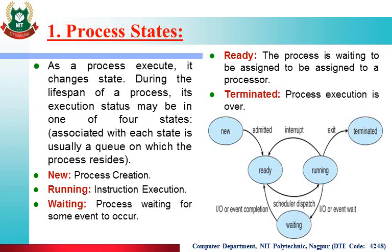Out of the number of processes, some become ready for starting their execution, so those processes move from the New state to the Ready state. From the earlier example: if job queue has 10 processes and 4 are ready, then those 4 come from New to Ready — which we call 'admitted.' The Ready queue is in main memory (RAM). So: if the state of a process is New, the process is on the hard disk; if the state is Ready, the process is in main memory.